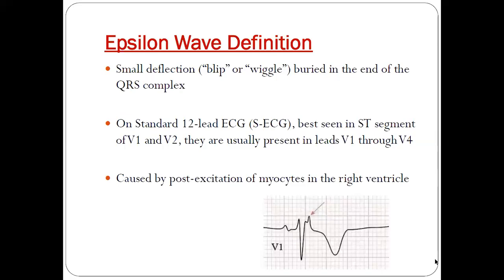Hello everyone, today we will be talking about epsilon waves in ECG. Epsilon waves are a small deflection buried in the end of the QRS complex.